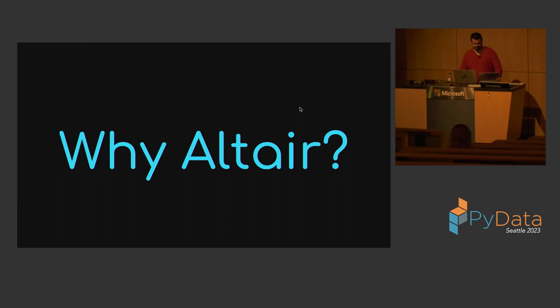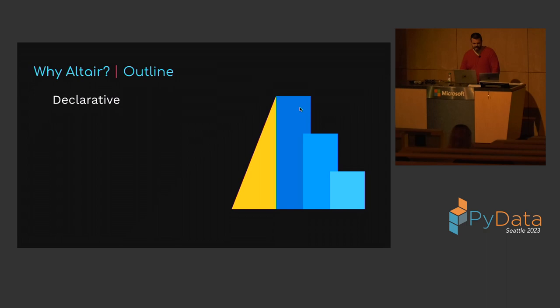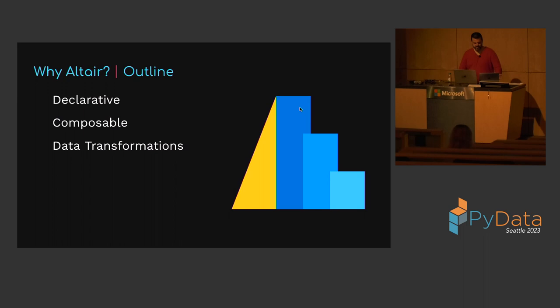And then I'll mention some additional applications of the core Vega Fusion technology. So why Altair? There are six areas I'm going to touch on. First, Altair's API is declarative, so you spend your focus on how data should be mapped to various elements of your chart, rather than focusing on writing lots of imperative steps to build up a chart step-by-step. Its API is also composable.